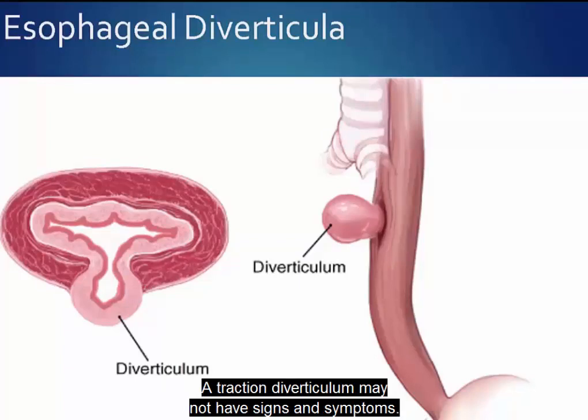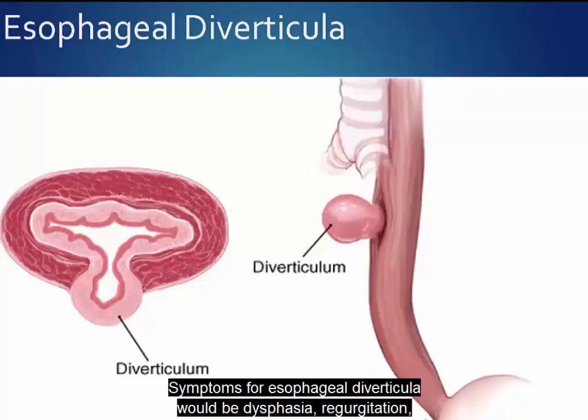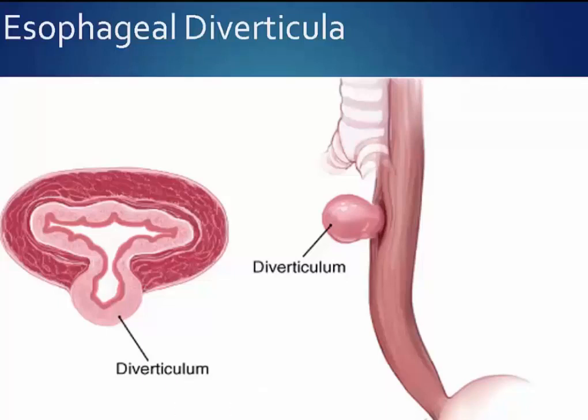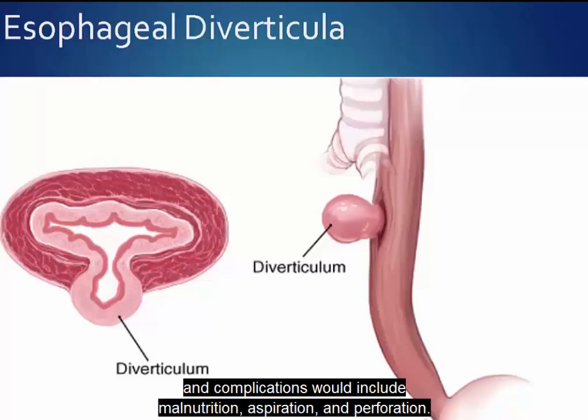A traction diverticulum may not have signs and symptoms. Symptoms for esophageal diverticula would be dysphagia, regurgitation, chronic cough, aspiration, and weight loss. Diagnostics would be endoscopy and barium studies, and complications would include malnutrition, aspiration, and perforation.